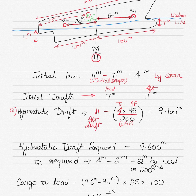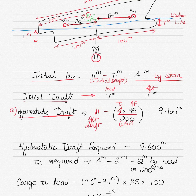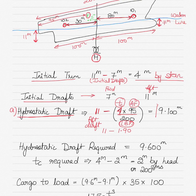First, calculate the initial trim: 11 meters minus 7 meters equals 4 meters by stern. Initial drafts are 7 meters forward and 11 meters aft. To find the hydrostatic draft, apply a correction to the aft draft of 11 meters. The correction is total trim (4 meters) multiplied by the distance of the center of rotation from the aft perpendicular (95 meters), divided by the length between perpendiculars (200 meters). This gives 11 minus 1.90, which equals 9.10 meters as the initial hydrostatic draft.